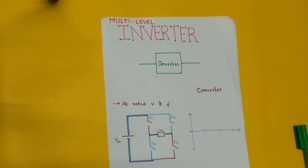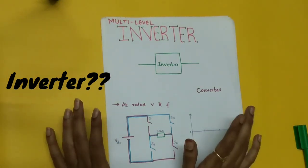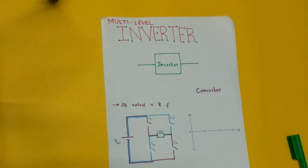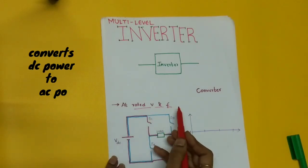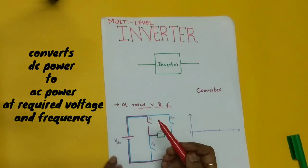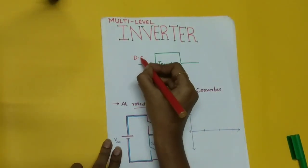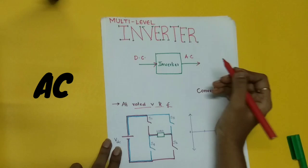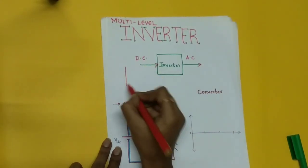Welcome to this video, where we are going to discuss multi-level inverters. To know what a multi-level inverter is and why there is a necessity for multi-level, we first need to know what an inverter is. An inverter is a basic circuit that converts DC power to AC power at a required voltage and frequency — if you give DC power at the input, you get AC power at the output.